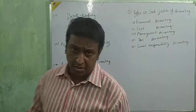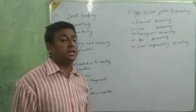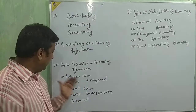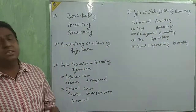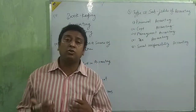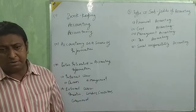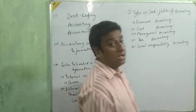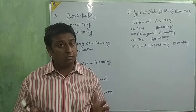The last topic today is parties interested in accounting information. We divide all parties into two parts: internal users and external users. Internal users are those directly related with the business who directly utilize the business information — they are the internal users. External users are those outside the business, not directly related with it, who do not use this information directly. Internal users include owners — owners invest capital and want to know whether they are earning profit or not.